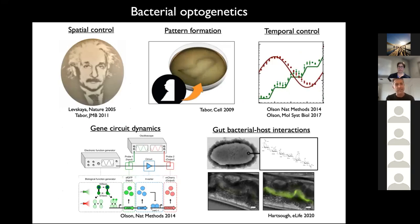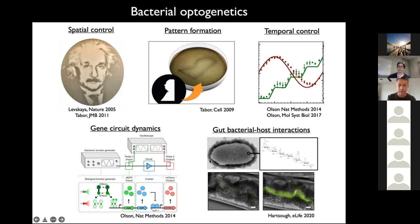We've done several applications with these optogenetic tools. Long ago we showed spatial control of gene expression across a synthetic film of bacteria with light, and used that to control a multicellular pattern circuit. We also focused on temporal control, programming artificial gene expression signals inside live bacteria. Most recently, with Meng Wang's lab, we used light to control gut bacterial metabolism in the intestine of live C. elegans worms to study a pathway where an exopolysaccharide, colanic acid, increases lifespan by modulating mitochondrial function.